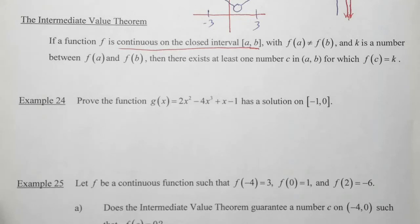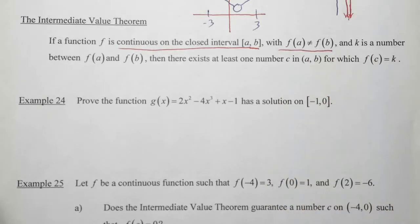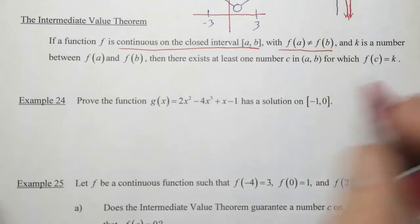There's a second condition as well, is that f of a cannot be equal to f of b. k happens to be some number between f of a and f of b. So let's kind of create this picture here.